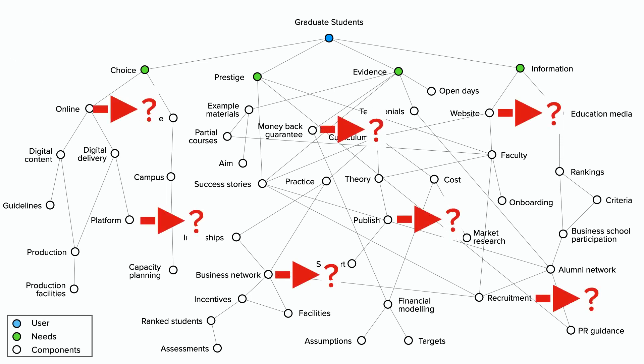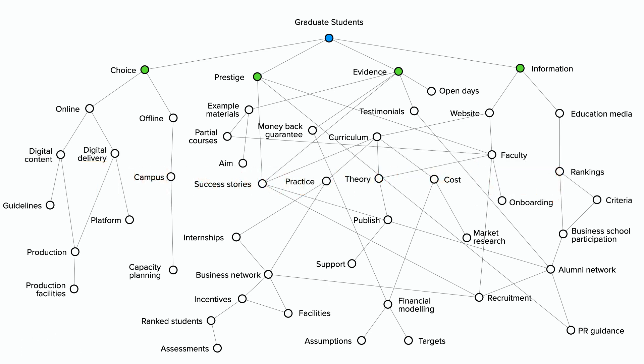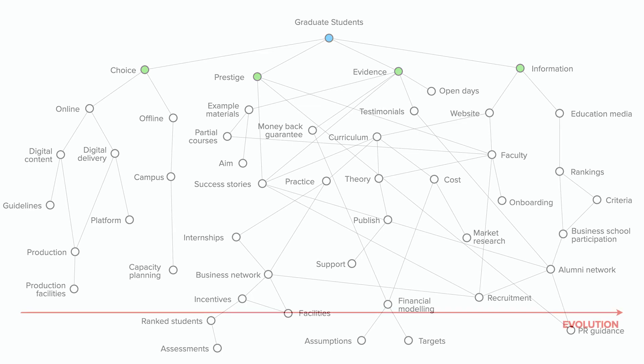However, this map doesn't provide us with options for movement. We have no idea where we should focus, and that's because this is not a map yet. To turn this into a real map we can use to help us find new paths forward, we're going to need to add in some concept of movement. And this is the key part of the Wardley mapping method: the evolutionary axis.